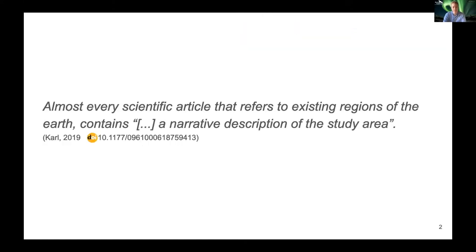Almost every scientific article that refers to existing regions of the Earth contains a narrative description of the study area. But nevertheless, more than a quarter of articles omit maps and coordinates and only use vague descriptions, albeit the relevance of location for said article's content. This contradicts the potential that the use of geospatial metadata has.